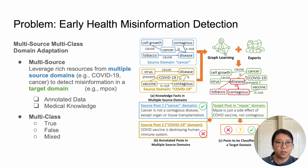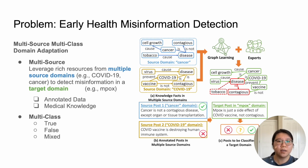In addition, we also formulate our problem as a multi-class classification problem, with the goal to not only detect true and false claims, but also identify claims that contain partially false or unverifiable information, and ultimately enhance health information credibility on the web.